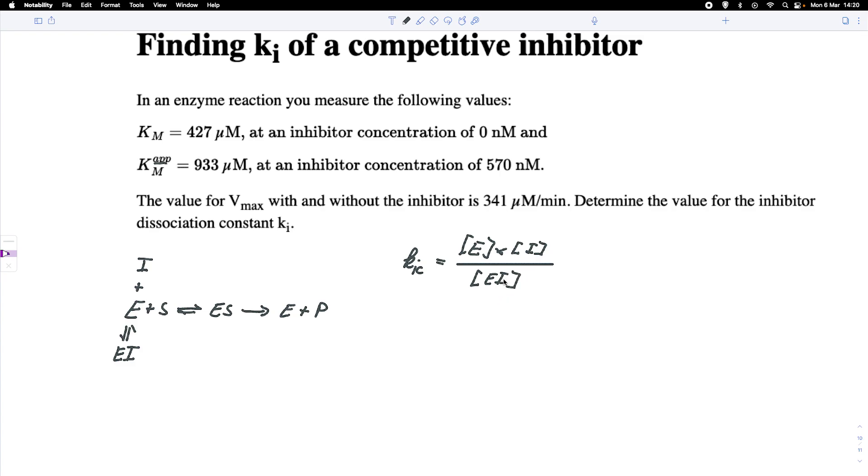So that is what we are looking for, this KIC. And of course it's not easy to find these different concentrations. So what we can do is we can basically say what do we expect for a competitive inhibitor.